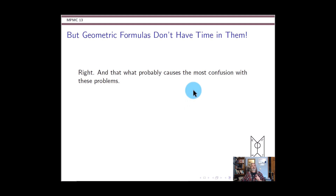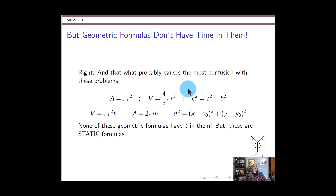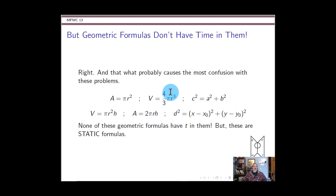Here's what I think is the biggest stumbling block in related rates: you're looking for a rate of change with respect to time, but none of these geometric formulas have time in them. Here's a whole bunch of formulas for areas and volumes, hypotenuse versus opposite and adjacent sides in a right triangle, distance between two points — all sorts of geometry. None of them have time in them. So how are we supposed to find rates of change with respect to time? Well, remember that these are all the static formulas from the good old days.